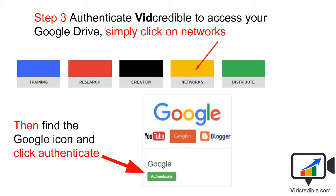Step three: you have your VidCredible account. Now that you're logged in, you'll see this menu with training, research, creation, networks, and distribute. Go ahead and click on Networks, and inside of there you'll see a bunch of networks. Simply find the Google option — it has icons for Google, YouTube, Google+, and Blogger. Once you click it, it'll drop down and show the authenticate button — just click it.